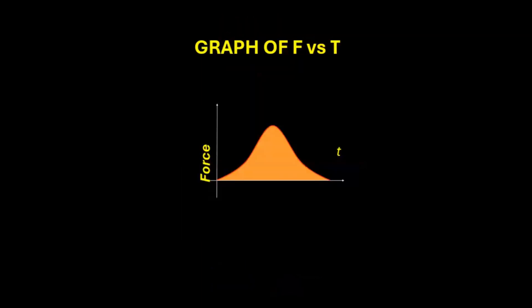For a graph of force versus time, area under the graph gives you impulse. Impulsive force, in such a case, acts for a very small duration of time but has a very large magnitude.